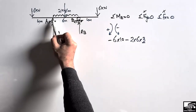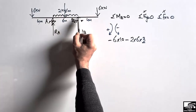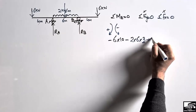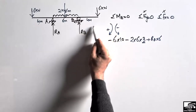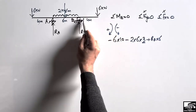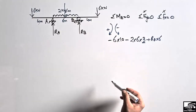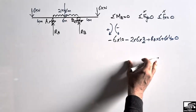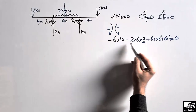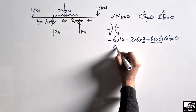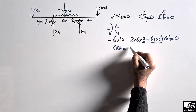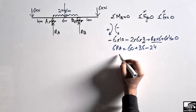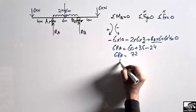The right end load of 6 kilonewton acts clockwise about B with a moment arm of 4 meters, giving plus 6 times 4. Setting the sum equal to zero: 6·RA = 60 plus 36 minus 24, which gives 6·RA = 72. Therefore RA equals 12 kilonewtons.